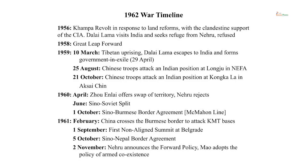Another important development was the Sino-Soviet split. In the Cold War between the Soviet Union and the United States, China had leaned toward the Soviet side in its early years. But gradually differences developed — the Soviet Union wanted Mao to follow the Soviet line, while Mao wanted to follow an independent policy.